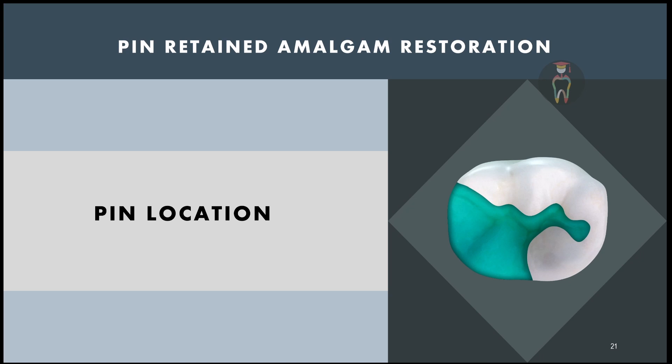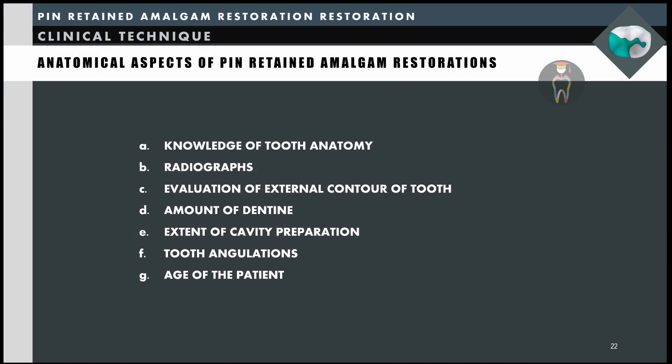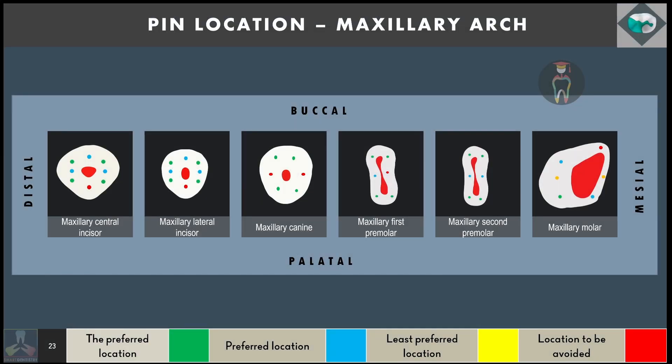Pins cannot be placed in any location of the tooth — there are specific locations for each tooth. To place a proper pin, a good knowledge of tooth anatomy is needed. Radiographs must be taken, the size of the pulp chamber must be evaluated, the external contour of the tooth assessed, the amount of remaining dentine noted, the extent of cavity preparation considered, and the angulation of the tooth and age of the patient taken into consideration.